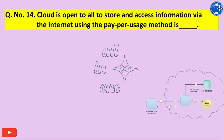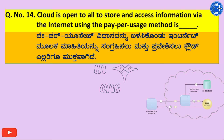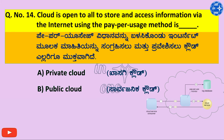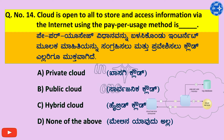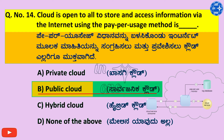Number 14. Cloud is open to all to store and access information via the internet using the pay per usage method is dash. Right answer is B. Public cloud.